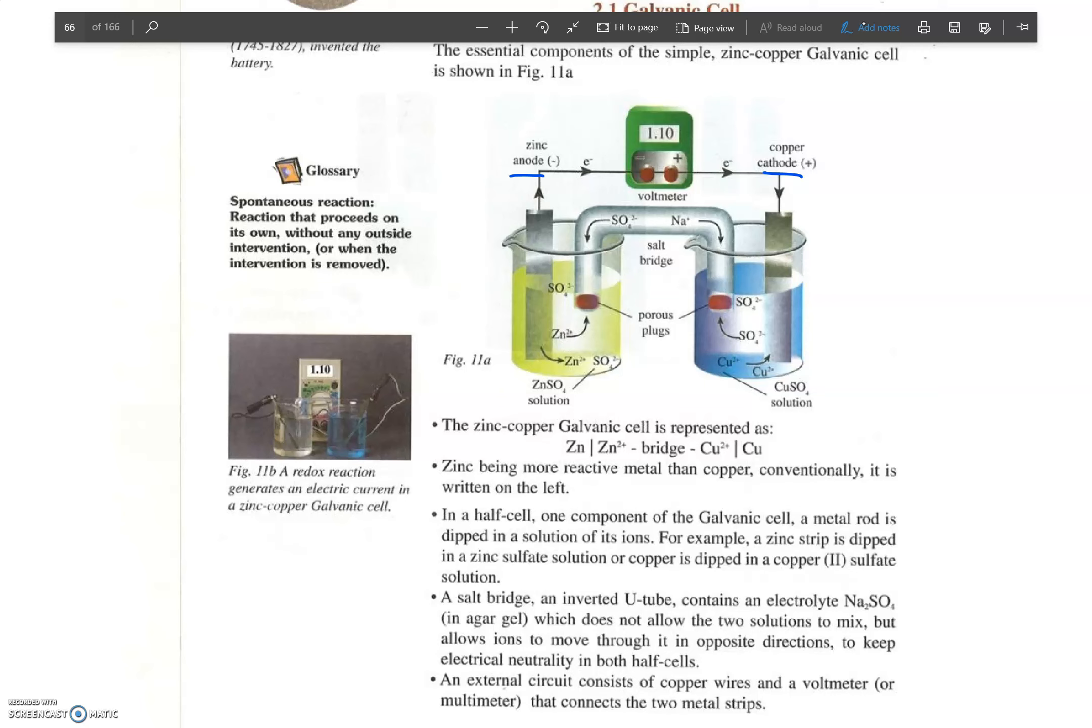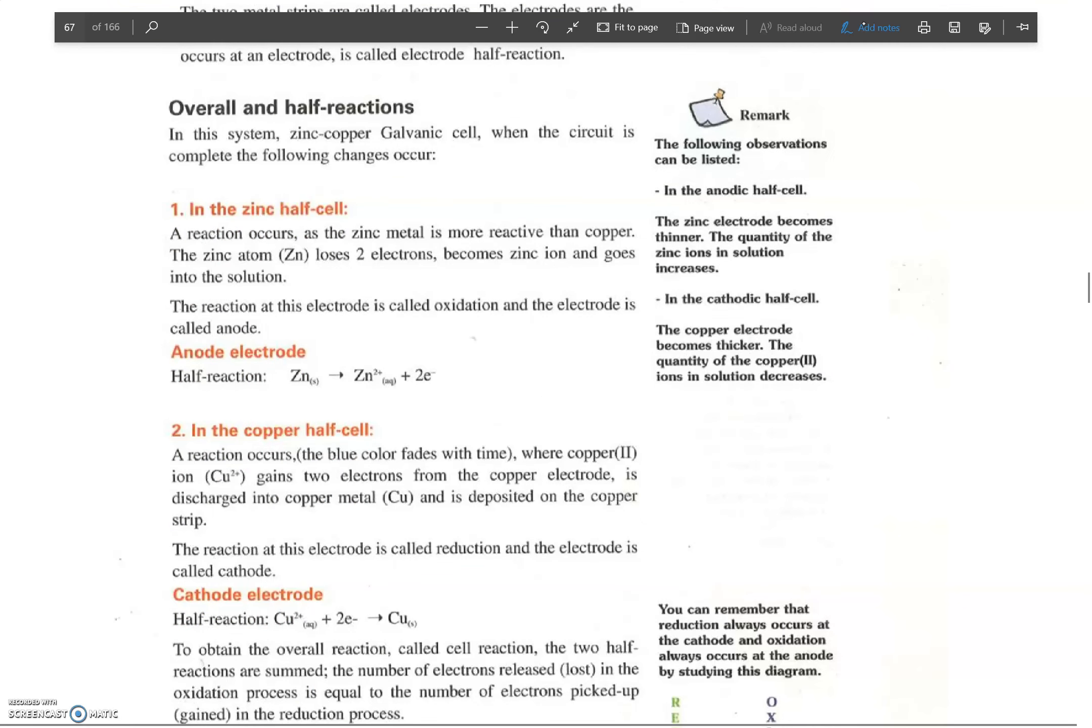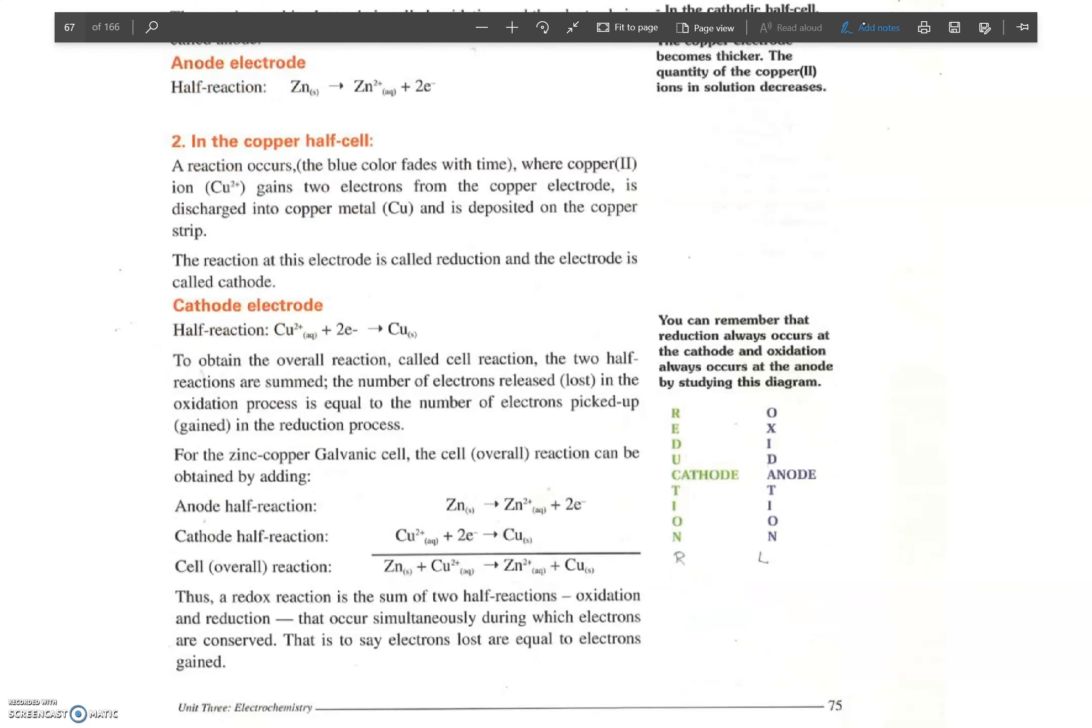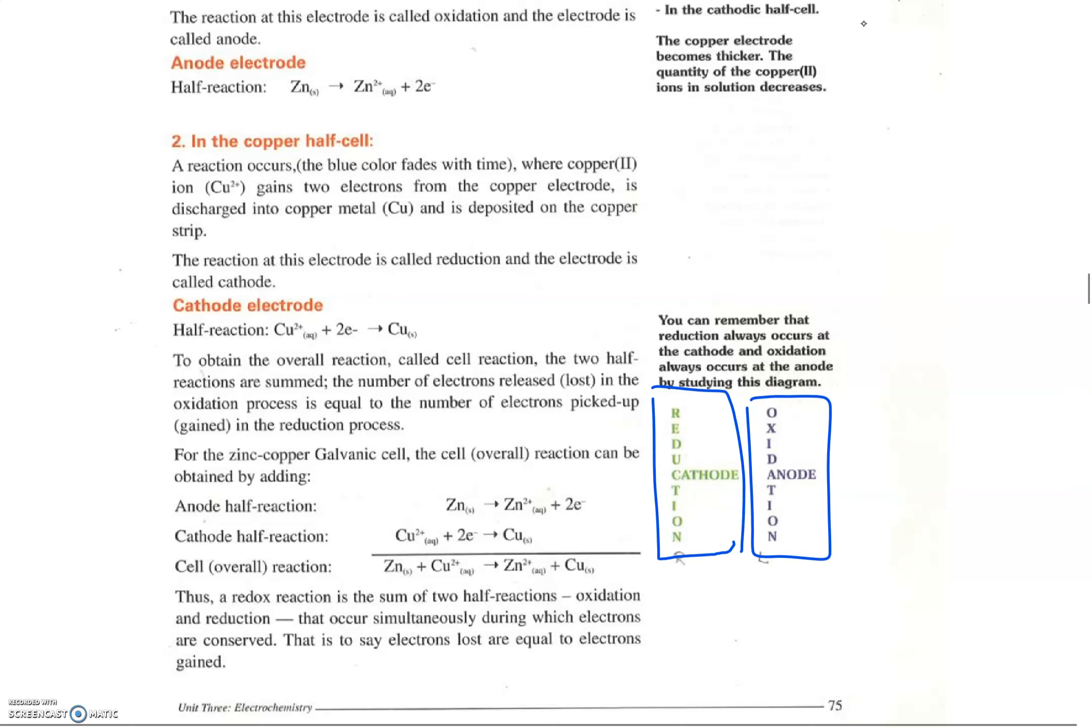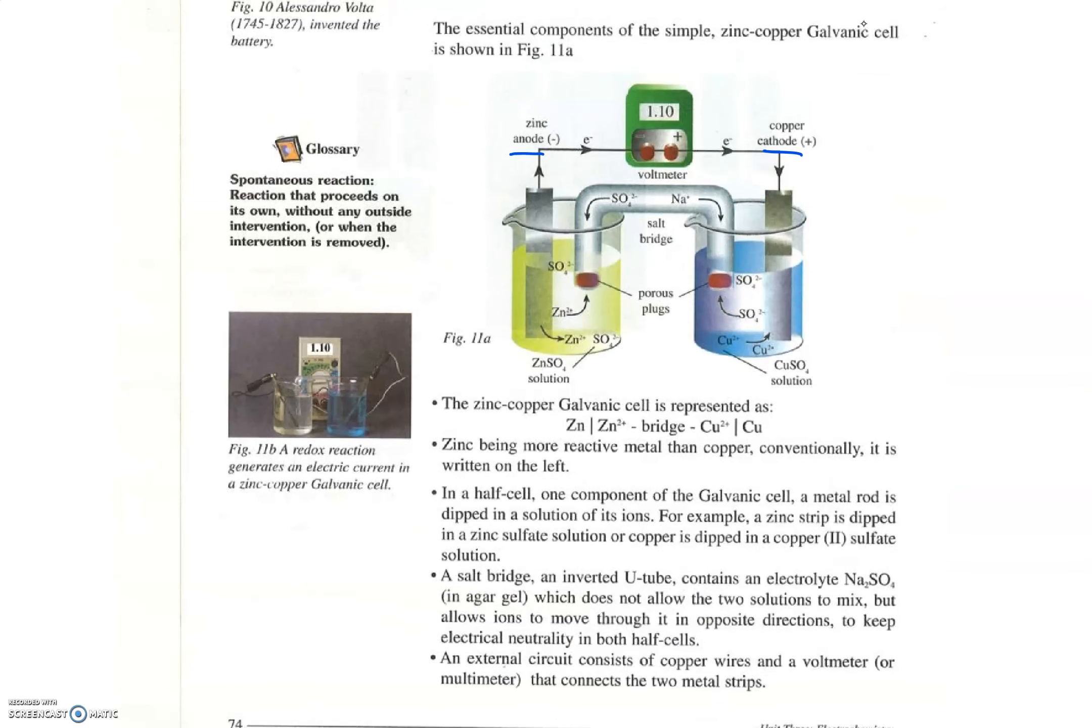In the anode happens the oxidation and in the cathode happens the reduction. So in this particular example, we have zinc and copper. If you remember, we have zinc in a solution of zinc ions Zn2+ and copper in the solution of Cu2+.